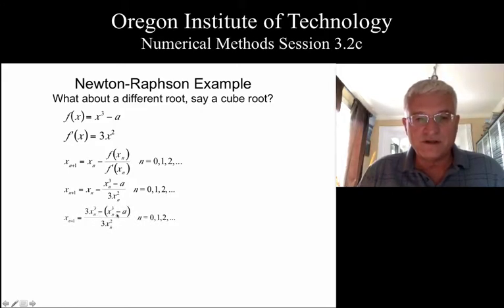We still want to get rid of these subtractions, but that's easy to do, turning the first one into 2x sub n cubed, and we'll get a positive a, since a minus times a minus is a positive value.